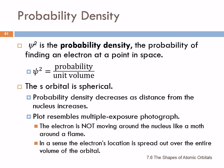And so depending on what L equals, whether it's 0, 1, 2, or 3 — S, P, D, or F type of orbital — that specifies the shape of the orbital. So the S orbital is spherical, and the probability density decreases as the distance from the nucleus increases.